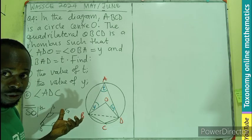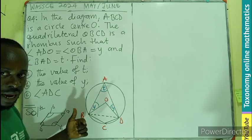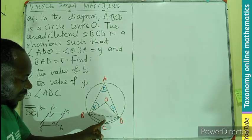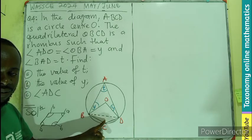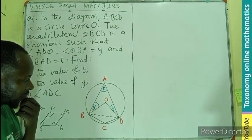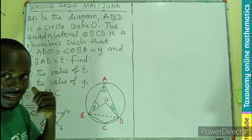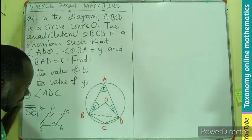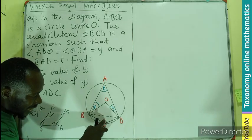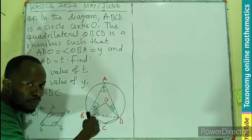The second property is that the opposite angles of a cyclic quadrilateral add up to 180°, meaning this angle t plus this other angle must give us 180°. We also know that the opposite angles of the rhombus are equal, so this angle here will be the same as the corresponding angle at the center of the rhombus.